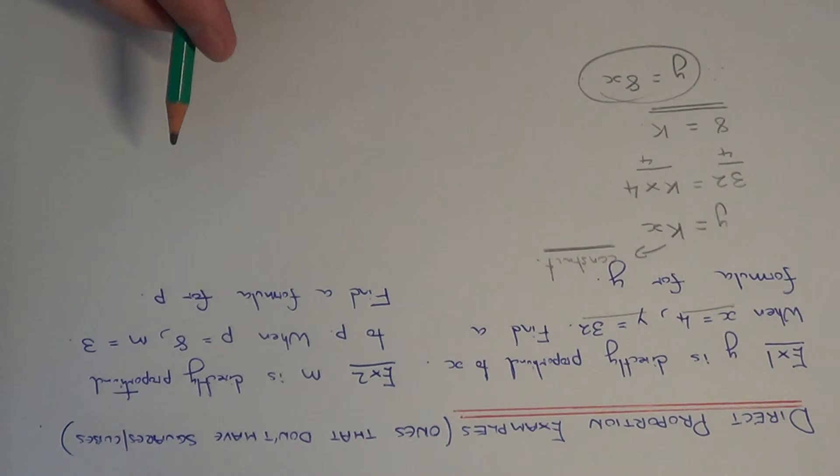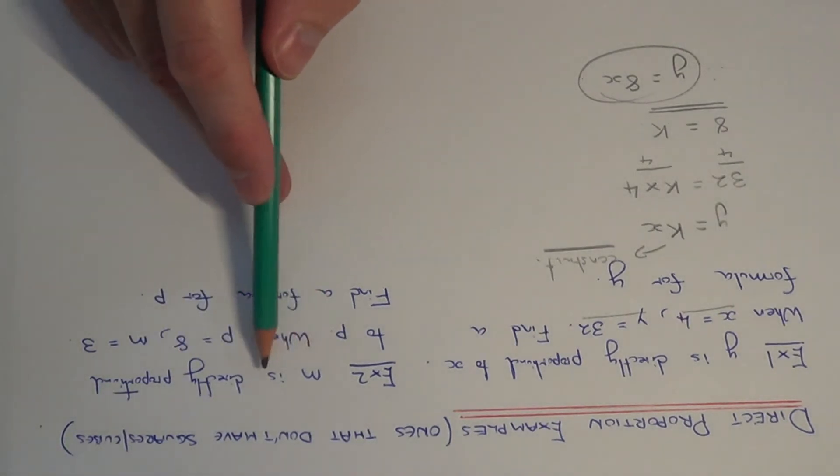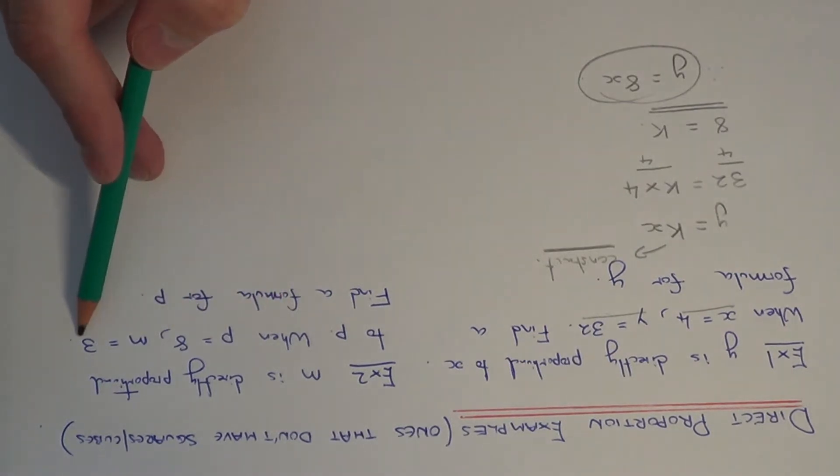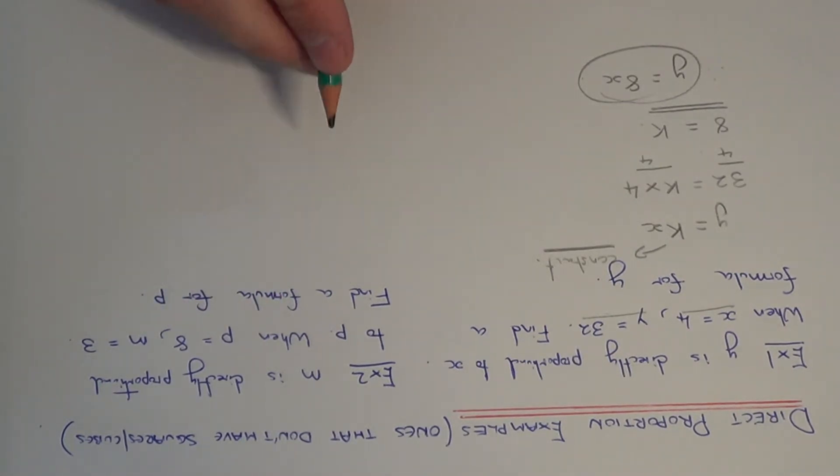So let's move on to example 2 then. So this time we have m is directly proportional to p, and when p equals 8, m equals 3, and we need to find a formula for p.